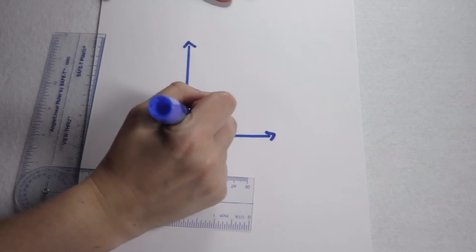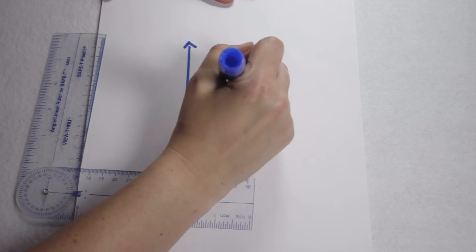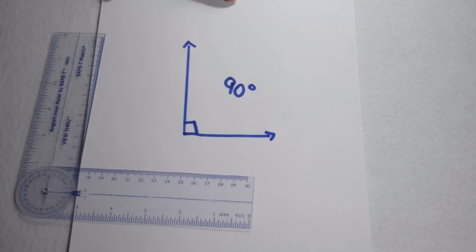When I do, I can add my little box in the corner to show that it's a 90 degree angle and I have my angle.